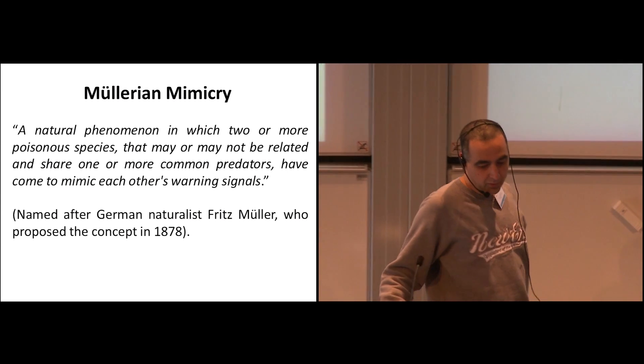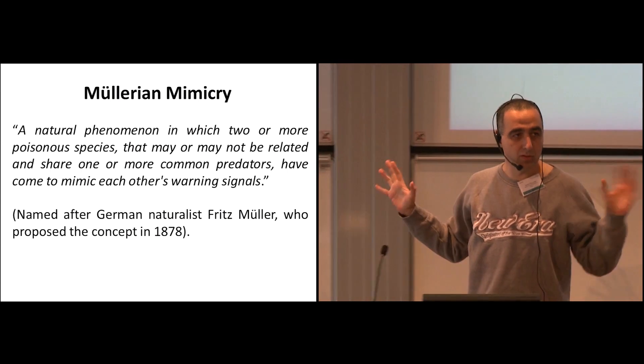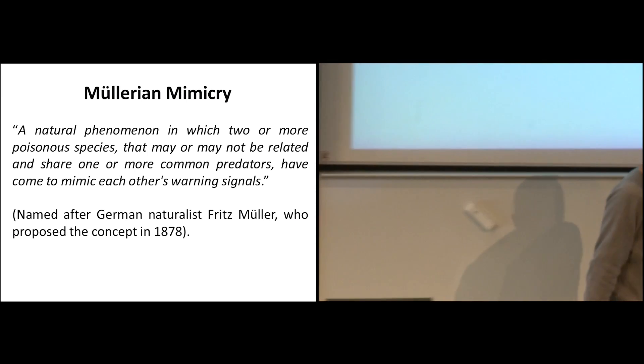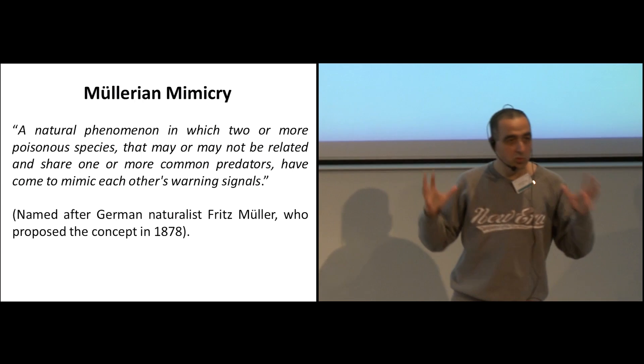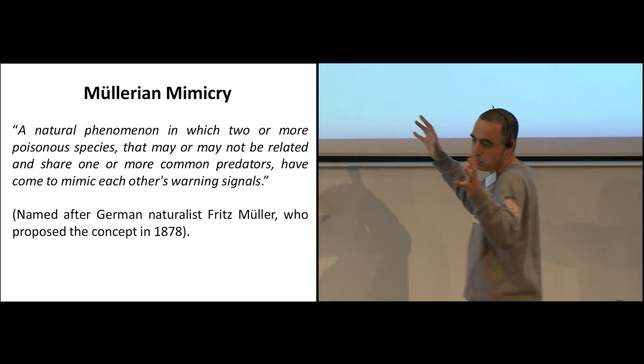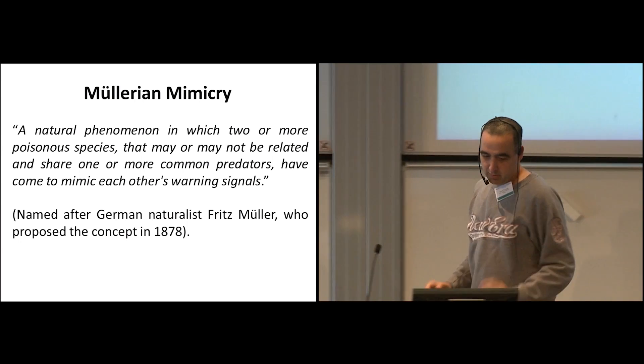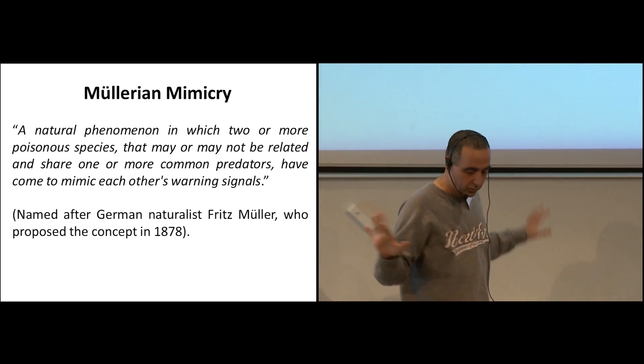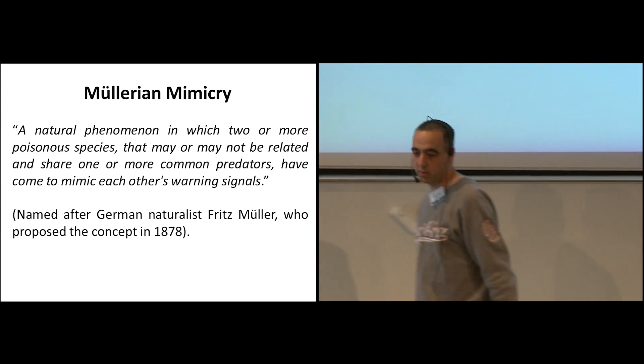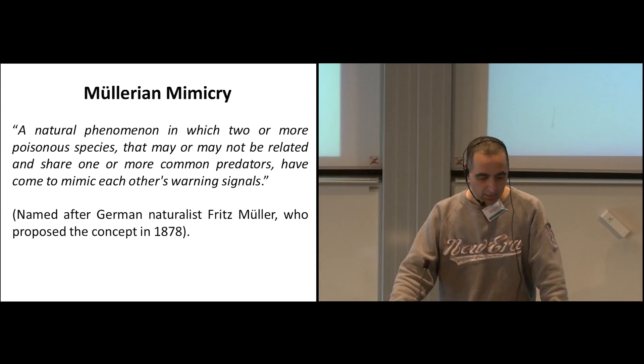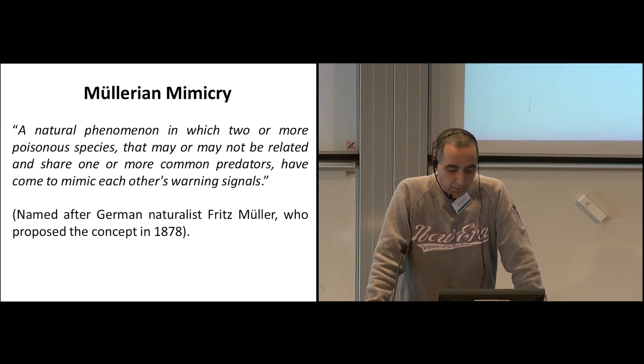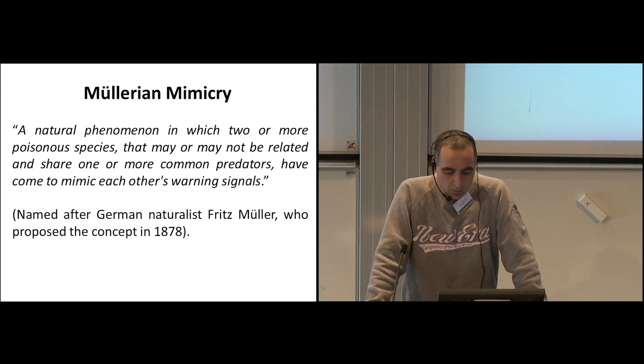And this is a natural phenomenon where you have two or more poisonous species. So you imagine that you have species that can do some harm to you. But you have two harmful species that may not be related to each other. They can belong to completely different worlds. But they have in common the fact that they happen to have the same predator, someone who actually would like to eat them.